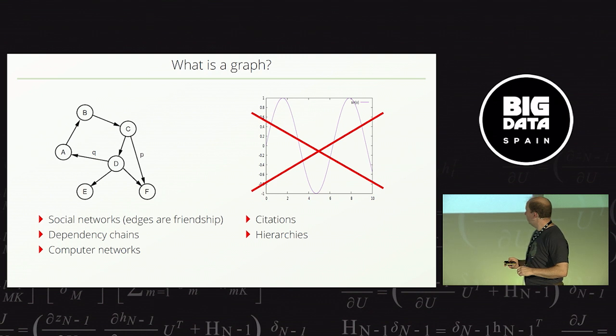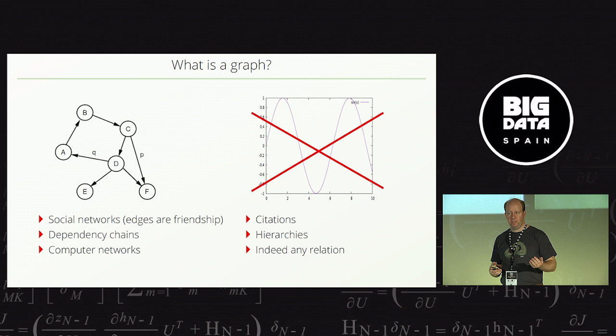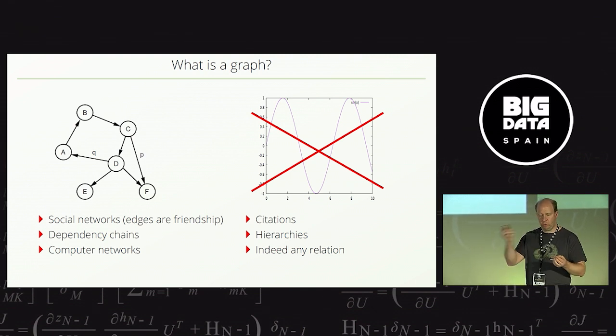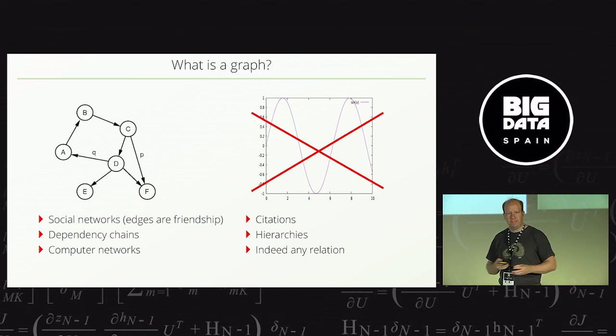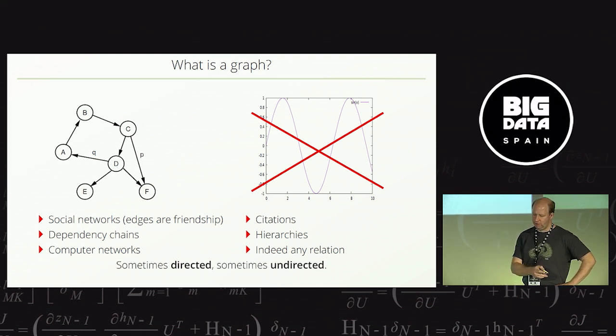And actually, if you think about relations and relational data, a relation is nothing but a graph. If the relation is on a set, then the elements of the set can be seen as the vertices and there is one edge from a vertex to another one if they are in relation. So, indeed, any relation is a graph. So, therefore, graphs really are everywhere. So, not everything is a graph but graphs are everywhere.